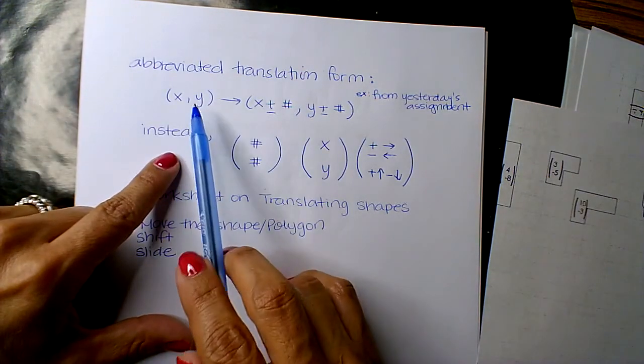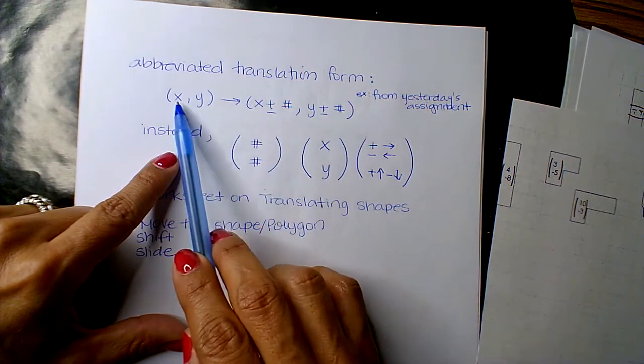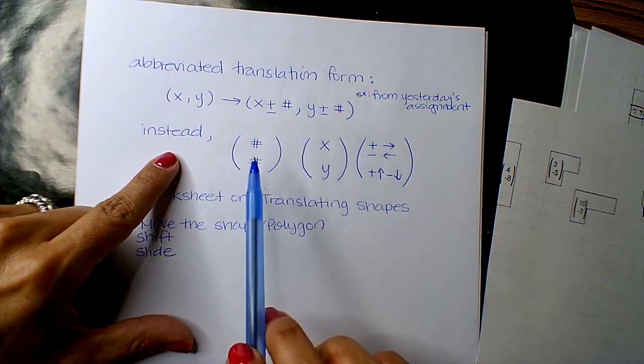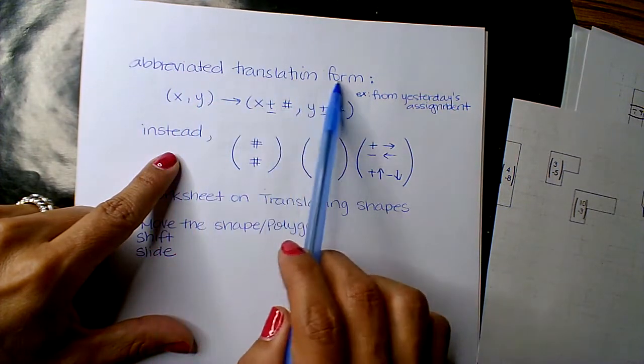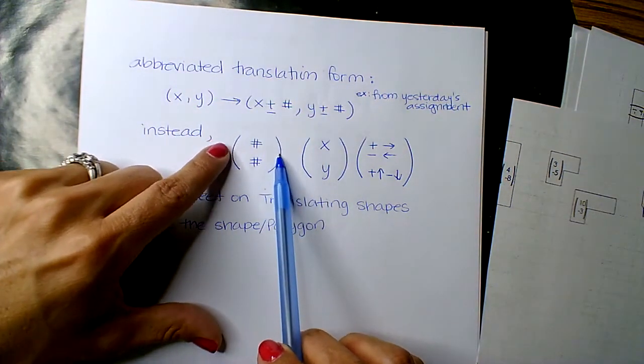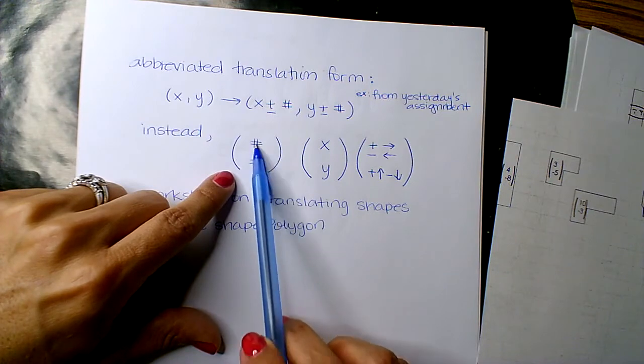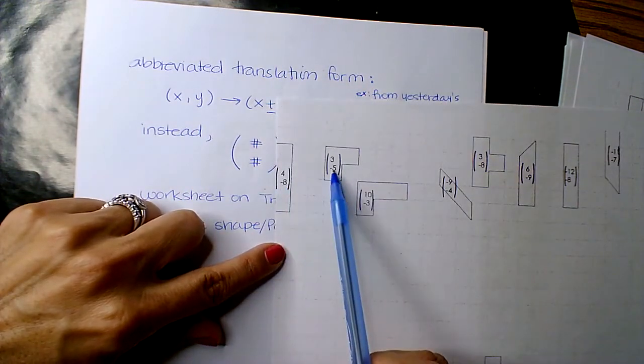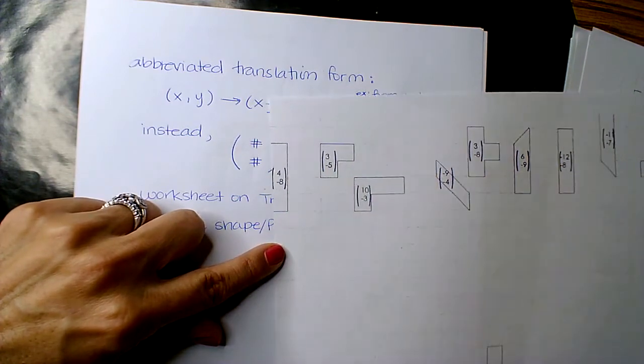So instead of you seeing this from Monday's assignment, this is the proper rule that you would get for translation. We're now in an abbreviated translation form, so basically you have a parentheses and two numbers that are stacked on top, right? Like 4, negative 8, 3, negative 5, 10, negative 3, negative 9, negative 4.